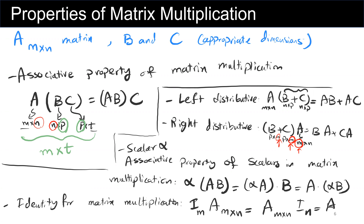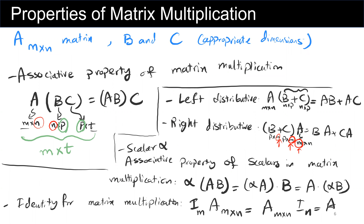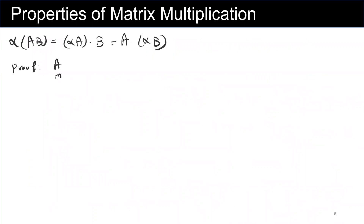To prove these properties, you can refer to the definition of matrix multiplication. Let's write the proof for the scalar associative property: alpha times AB equals alpha A times B. We define A as an n by m matrix with elements A_ij, and B as an m by p matrix with elements B_ij. Alpha is a real scalar value.